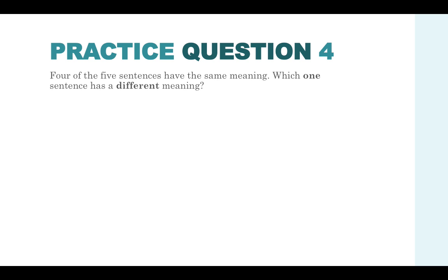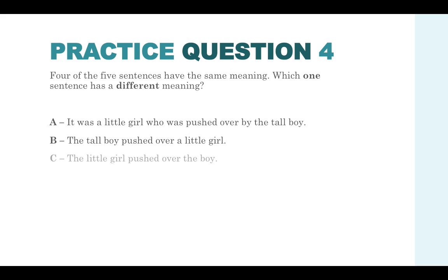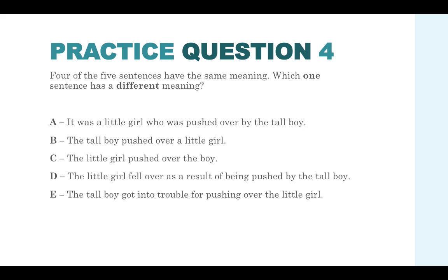Practice question four. Four of the five sentences have the same meaning. Which one sentence has a different meaning? A, it was a little girl who was pushed over by the tall boy. B, the tall boy pushed over a little girl. C, the little girl pushed over the boy. D, the little girl fell over as a result of being pushed by the tall boy. And E, the tall boy got into trouble for pushing over the little girl.